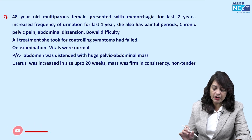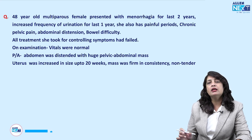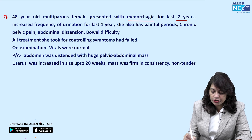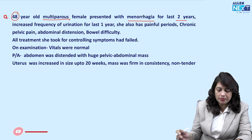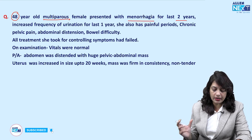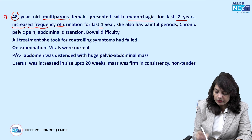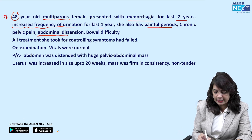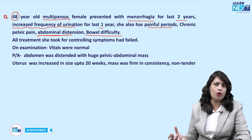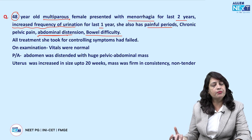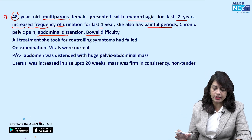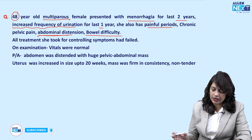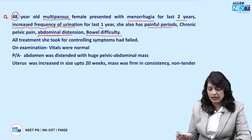A 48-year-old multiparous female presented with menorrhagia — that is, regular heavy cycles for the last two years. There is also a history of increased frequency of urination for the last one year. She also has painful periods (dysmenorrhea), chronic pelvic pain, abdominal distension, and bowel difficulty, which can be in the form of constipation or diarrhea. So there are both urinary symptoms and menstrual symptoms like menorrhagia.